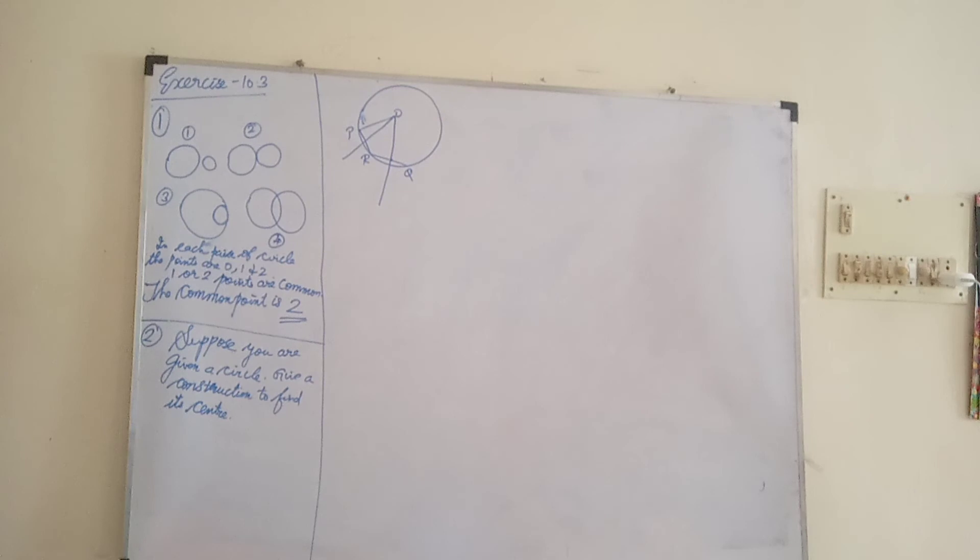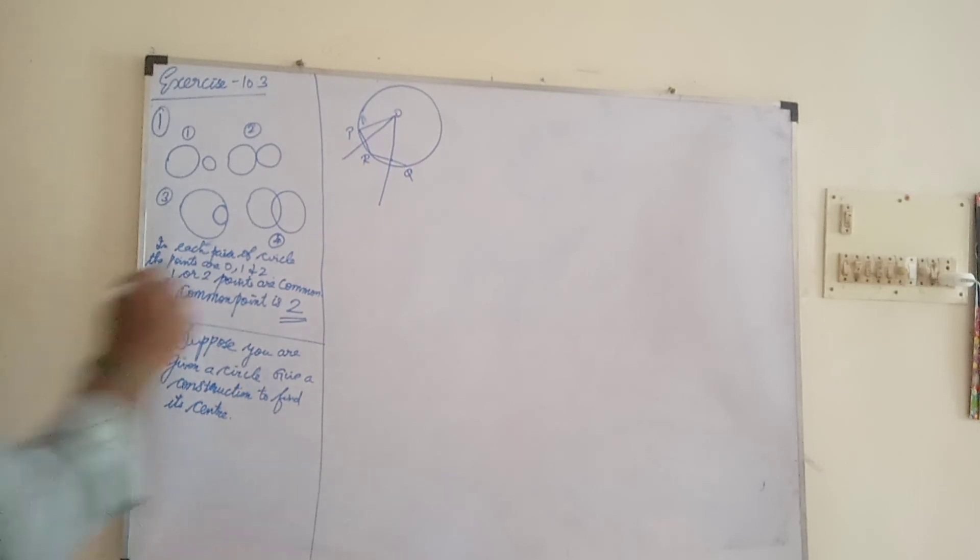Next question: suppose you are given a circle, give a construction to find its center. So this is one point here, another point, another point like this. The question is: given a circle, give a construction to find its center points. What are the points?